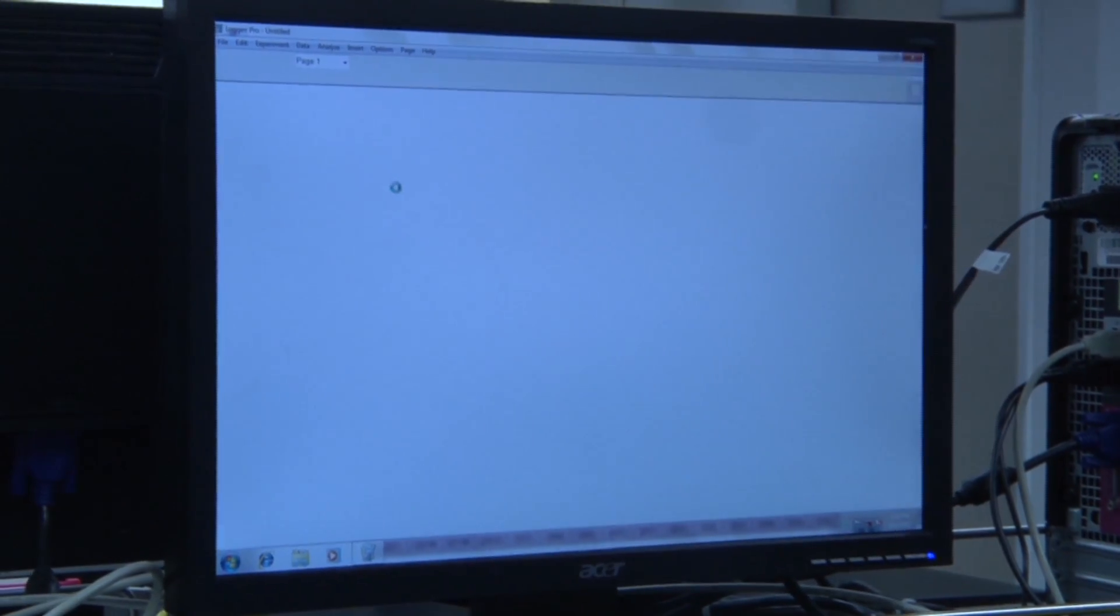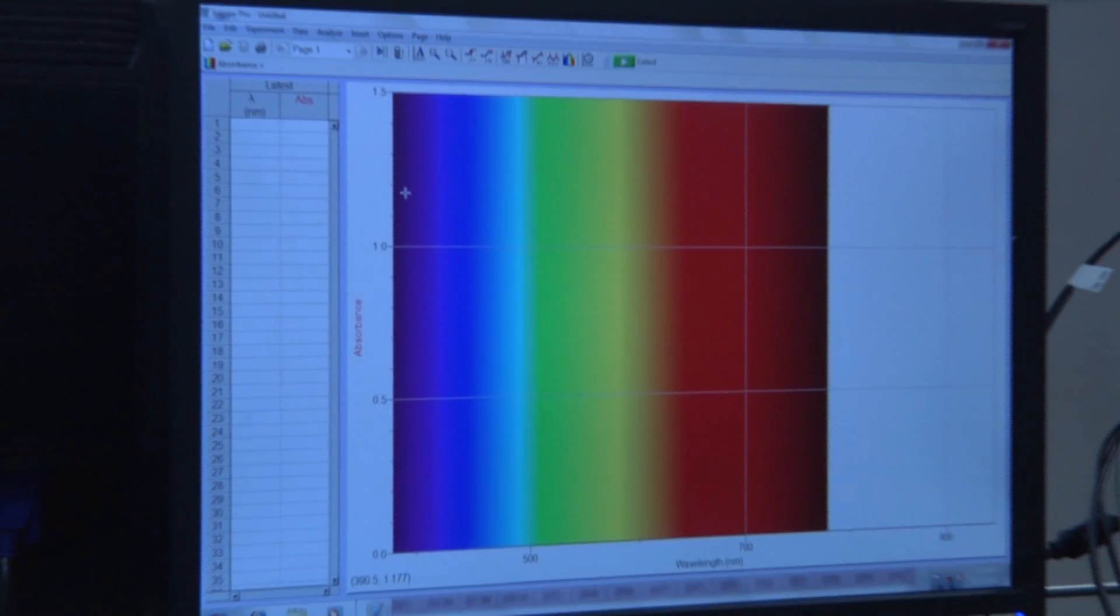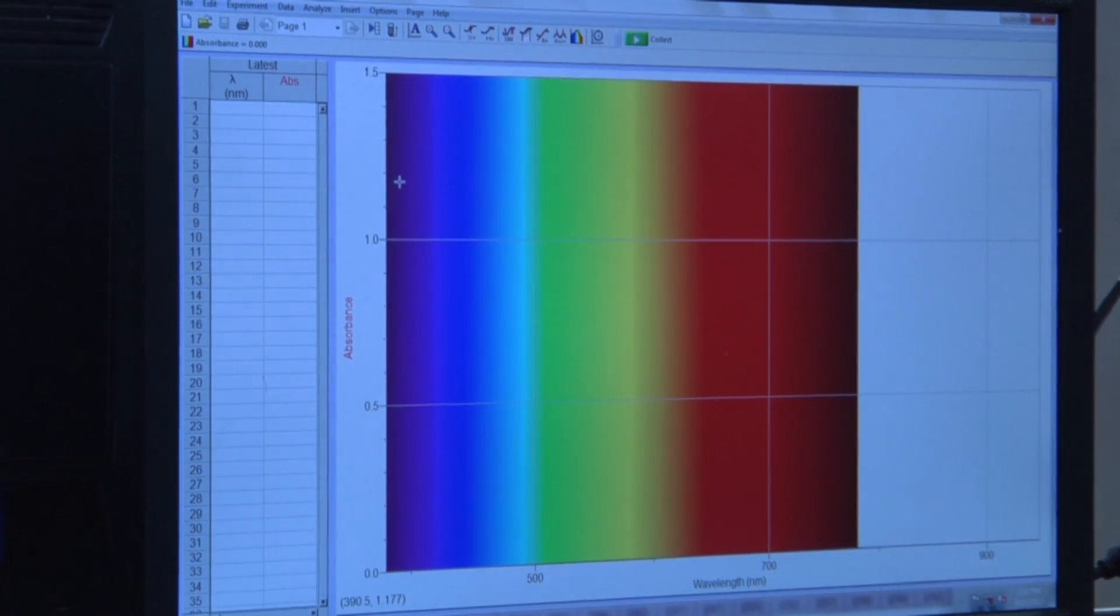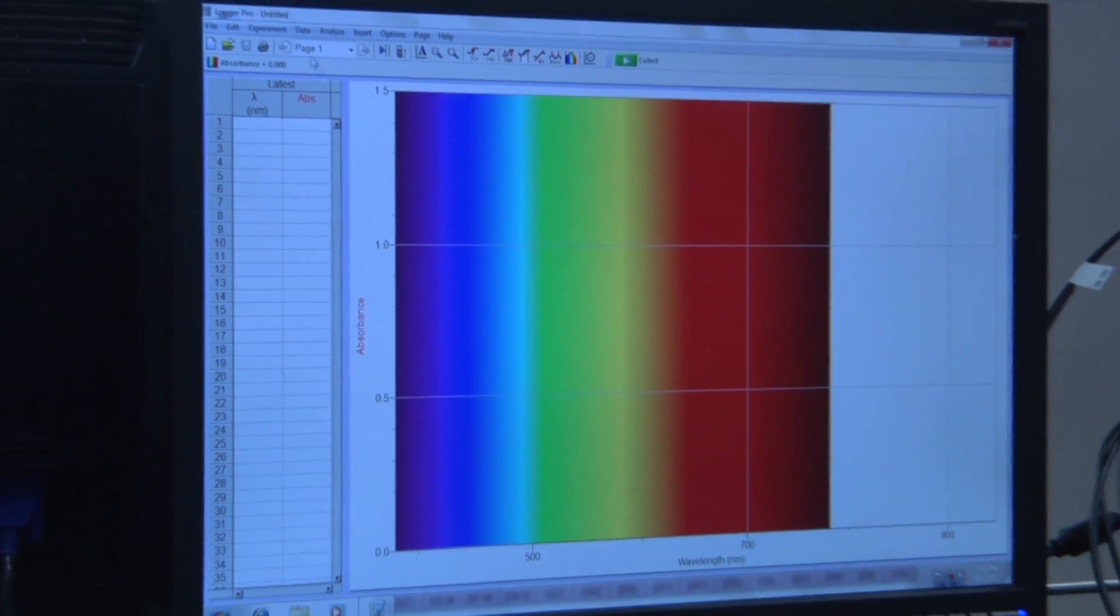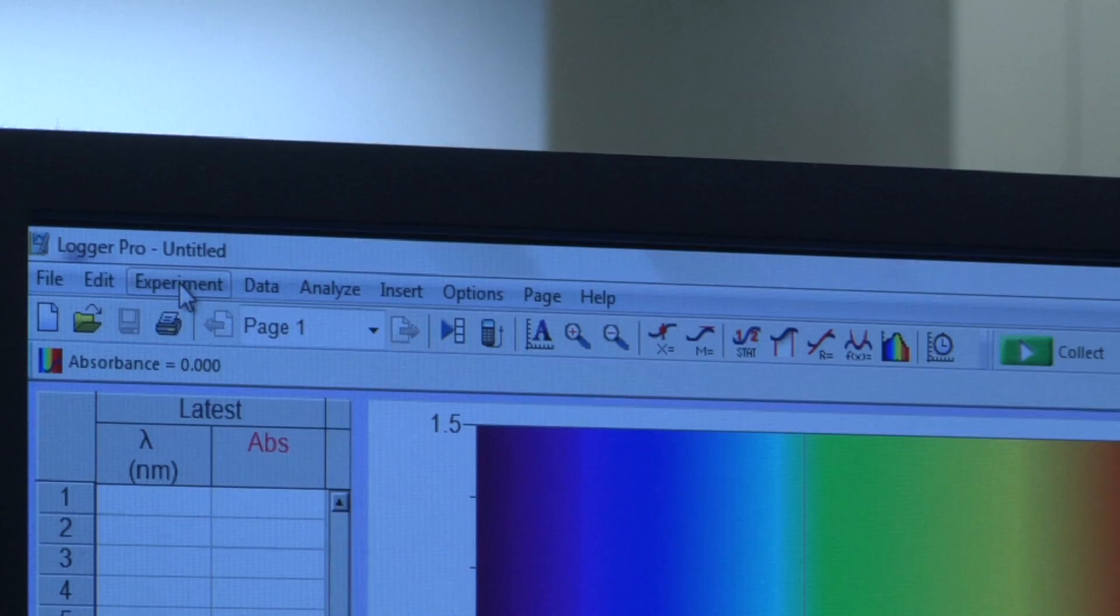The first thing to do is load Logger Pro. Once the computer has identified the spectrometer, a color spectrum will appear on the screen. Next you will need to calibrate the spectrometer.